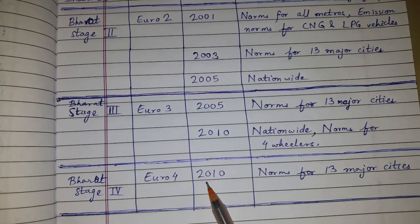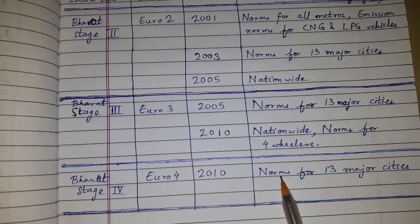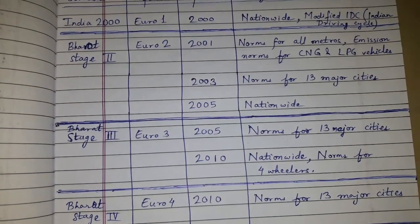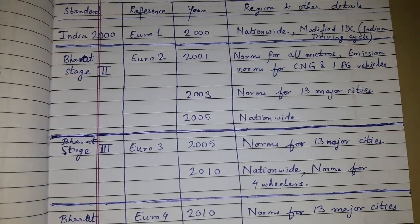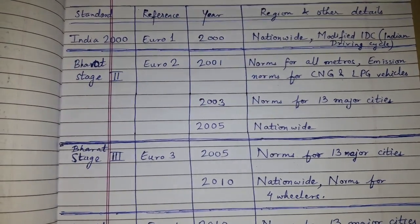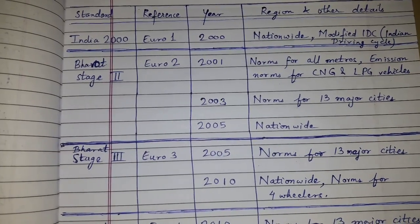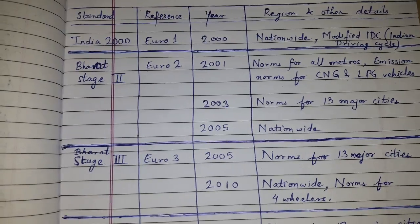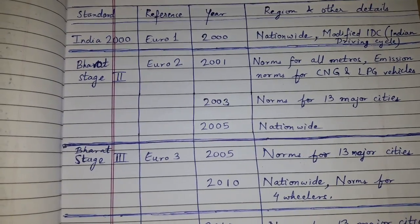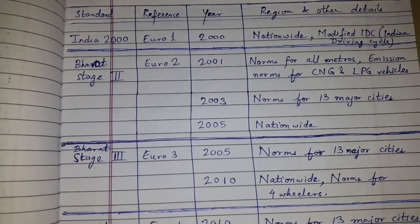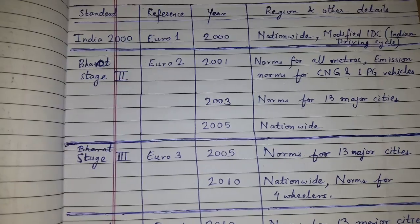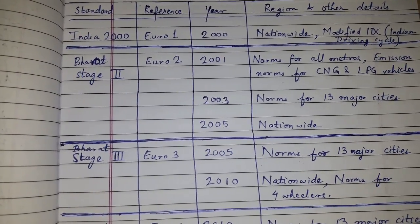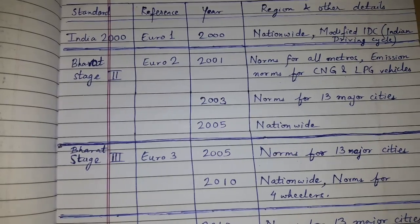Bharat Stage 4 norms were applicable for 13 major cities from 2010. These details are not provided in most textbooks, which is why this video was made — so that in examinations, along with the details given in the book, you can include this information to answer questions completely. Please like, comment, share, and subscribe. Thanks for watching.